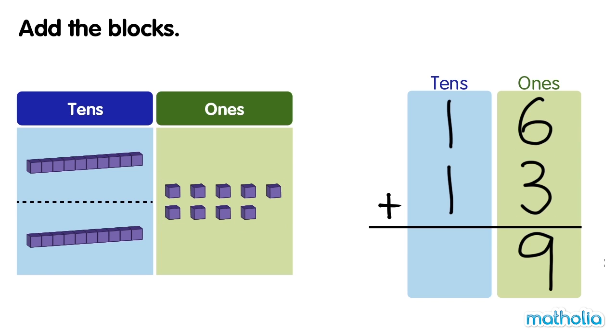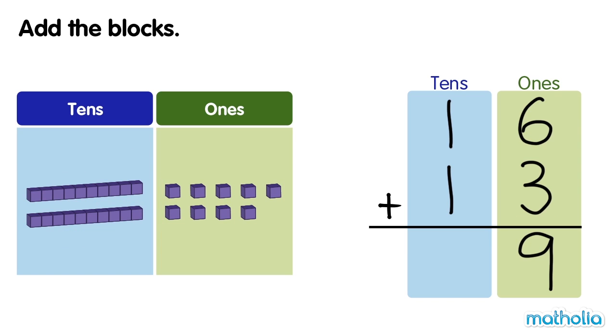Now let's add the tens. There are 2 tens. 1 ten plus 1 ten equals 2 tens. There are 29 blocks all together. 16 plus 13 equals 29.